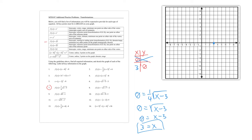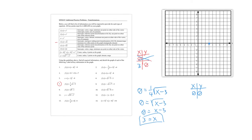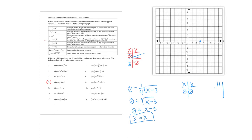The transformation of the starting point: the parent function starts at (0, 0), but we have a horizontal shift right 3 and a vertical compression by a factor of ¼. Vertical compression means multiplying the y-coordinate by ¼. So the new starting point is (0 + 3, 0 × ¼) = (3, 0), which we already have.